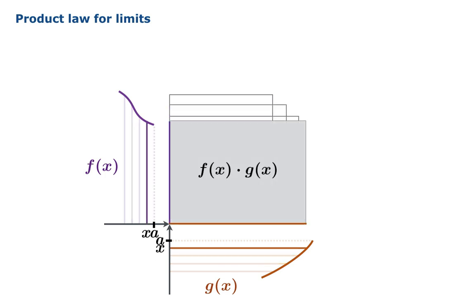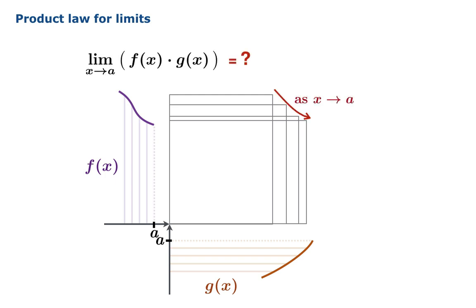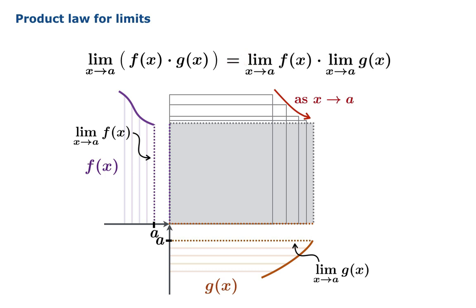Now we're going to watch what happens as x gets closer to a. We're going to get new rectangles each time. And the question is, what is the limiting value of the areas of these rectangles? The sides, the height and the base, those values are approaching the limiting values of f and g separately. And so it seems reasonable to imagine that the areas which represent f times g, those areas seem to be getting closer to the product of the limits of f and g independently, which are those sides of that rectangle that's pictured.